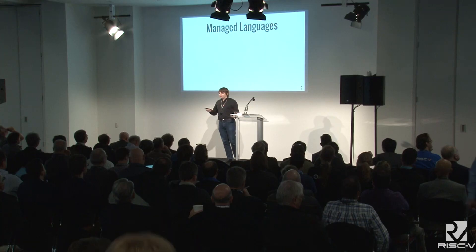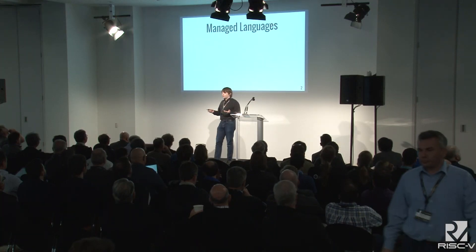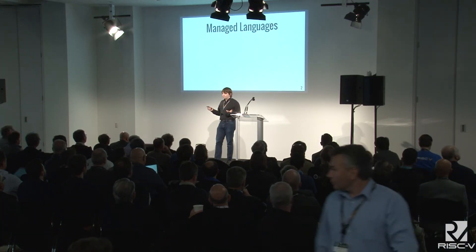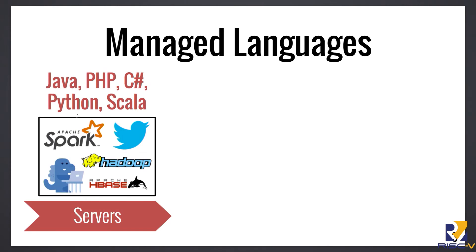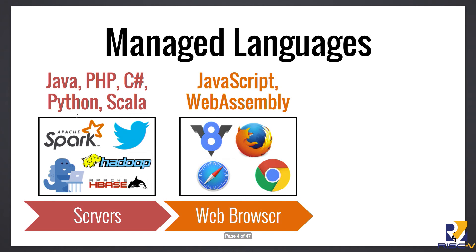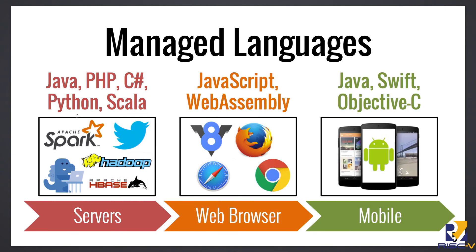Managed languages account for a large portion of workloads across a wide range of platforms. Many popular server workloads are written in languages like Java, PHP, and C#. Within the browser, all your code is written in JavaScript or more recently WebAssembly, and on mobile you have languages like Java, but also Swift and Objective-C. So one goal of RISC-V should be to target as many of these languages as possible, and targeting them well.